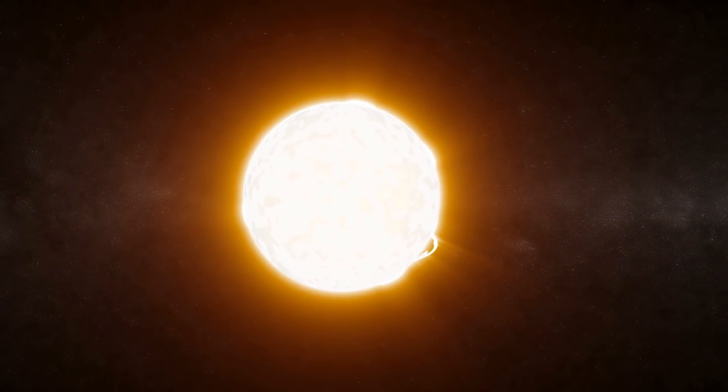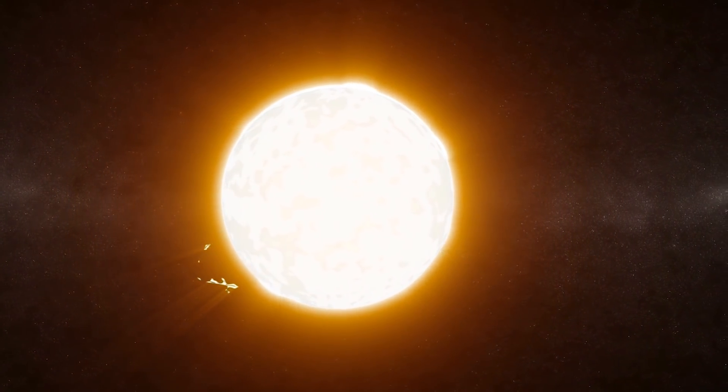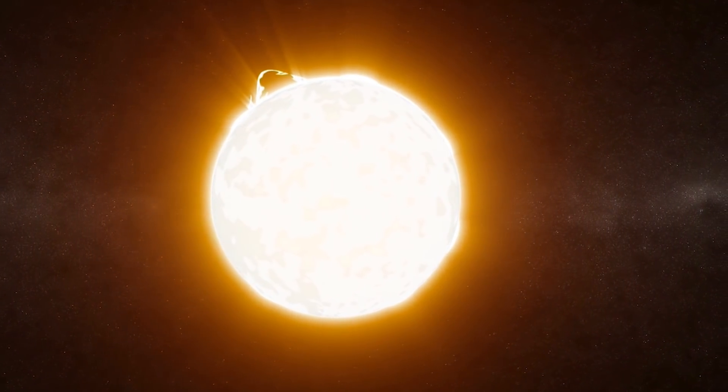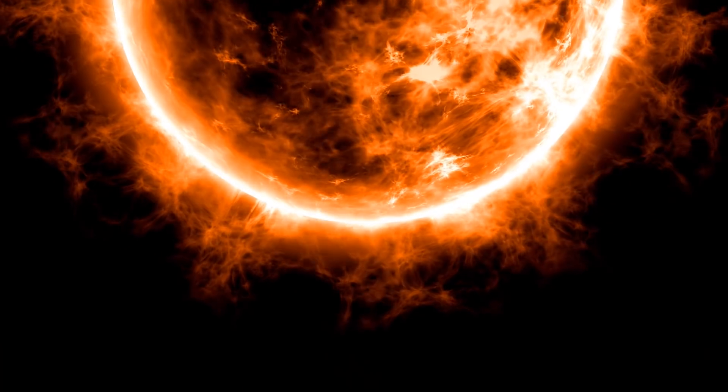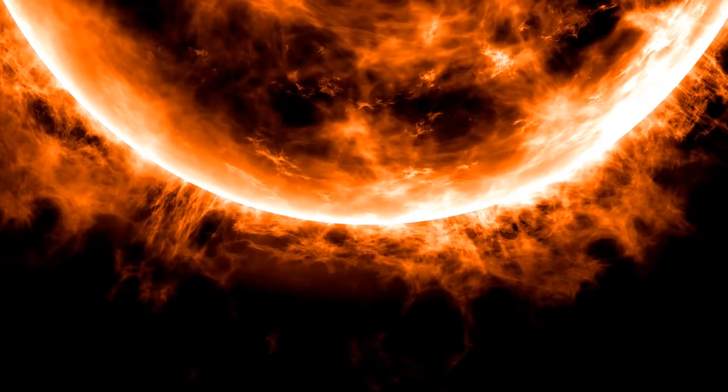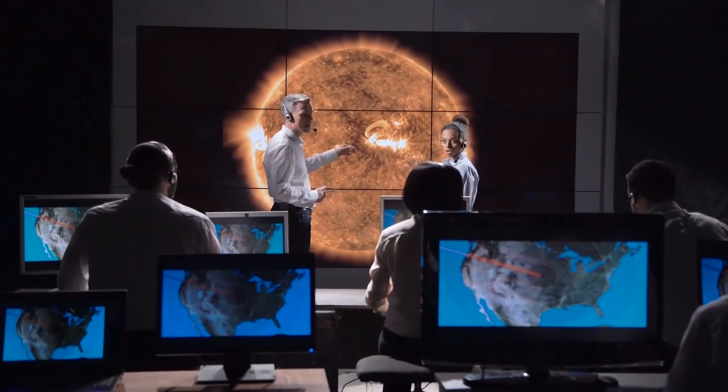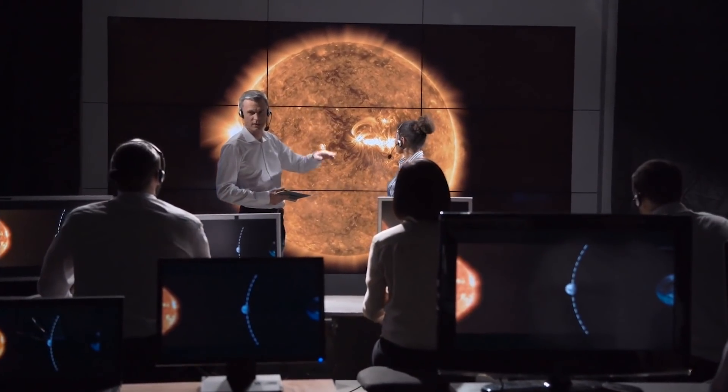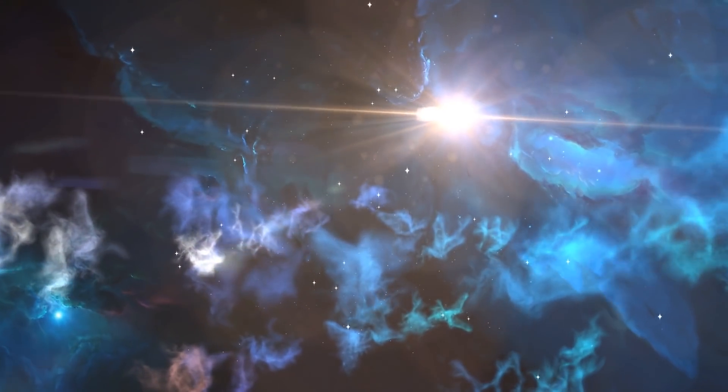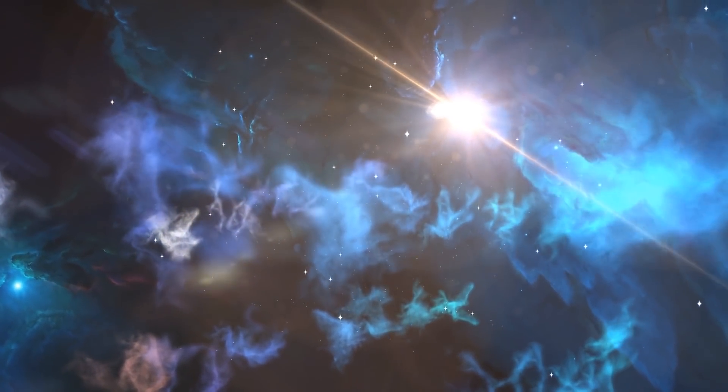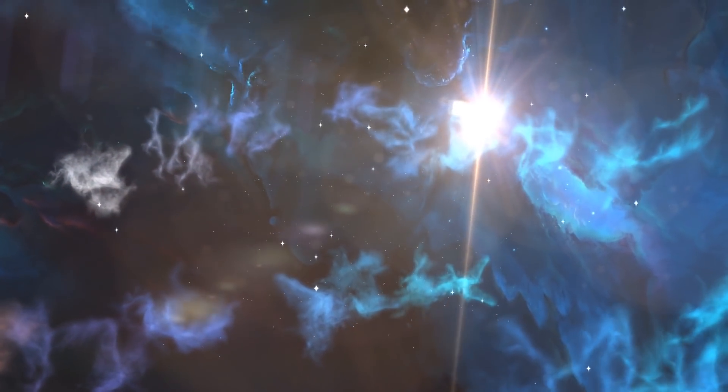But what it lacks in size, it makes up for in mass, because while it's only 20% bigger than Jupiter in raw size, in terms of mass it's over 100 times more. Now, technically speaking, there are more than likely smaller stars than OGLE TR-122b. And that's because scientists have determined the minimum size it would take to make a star via nuclear fusion, and it's smaller than OGLE TR-122b. It's just that we haven't found this kind of star yet.